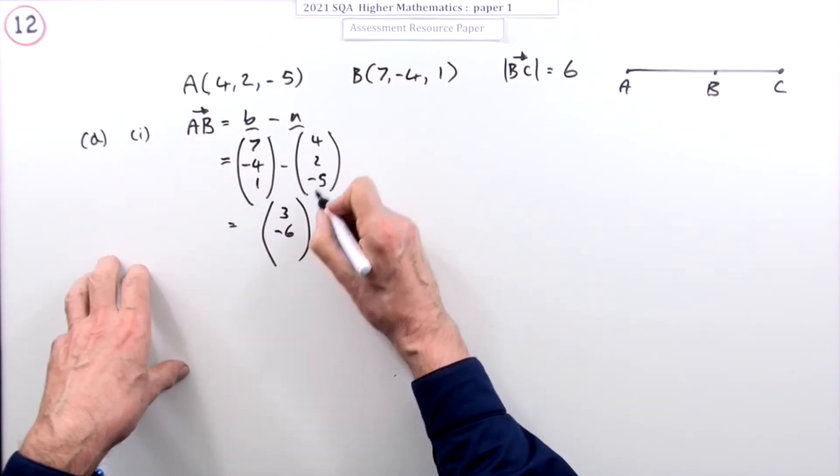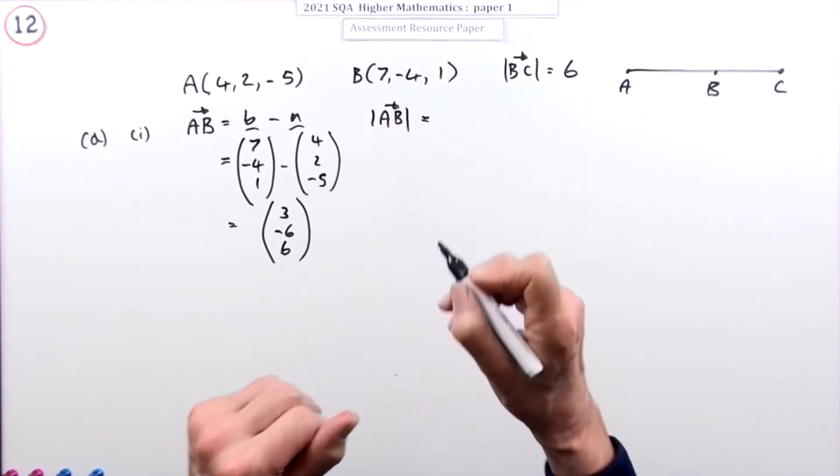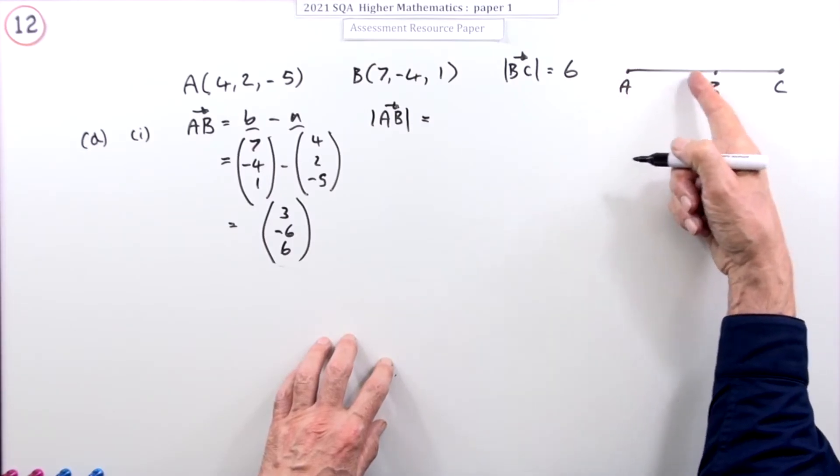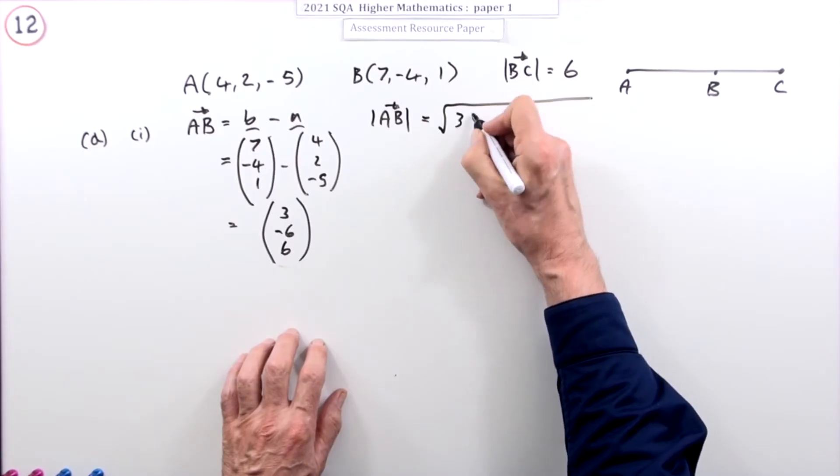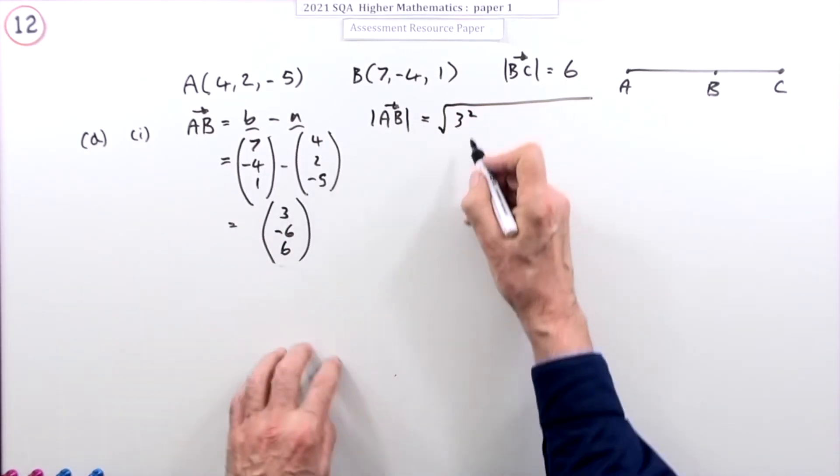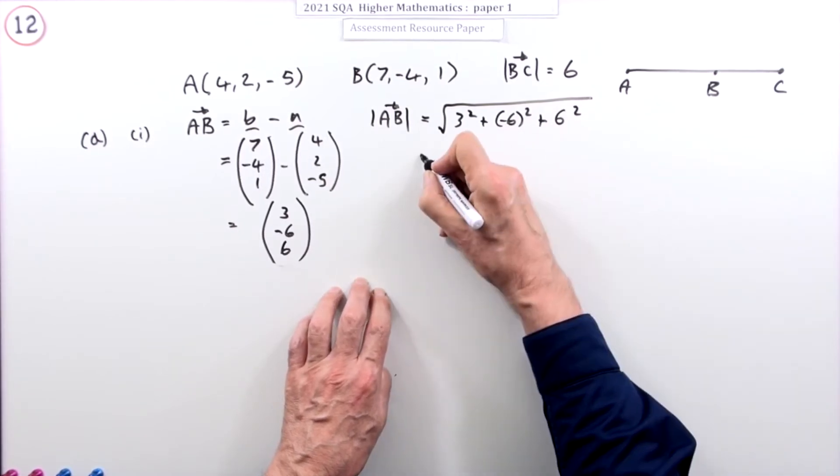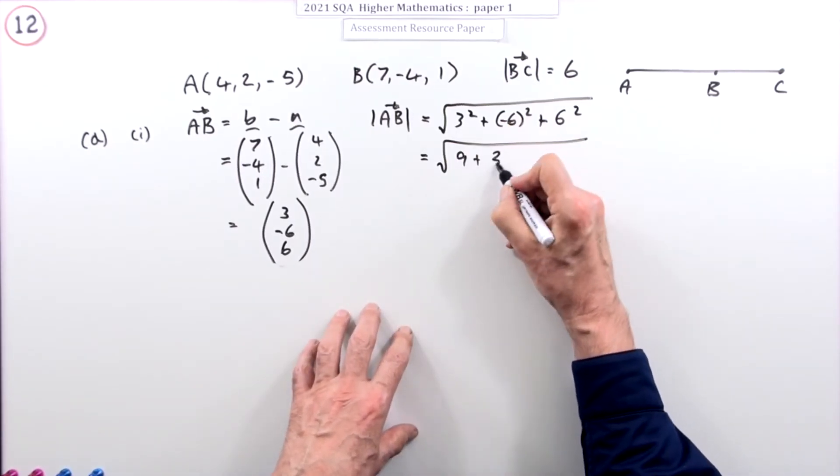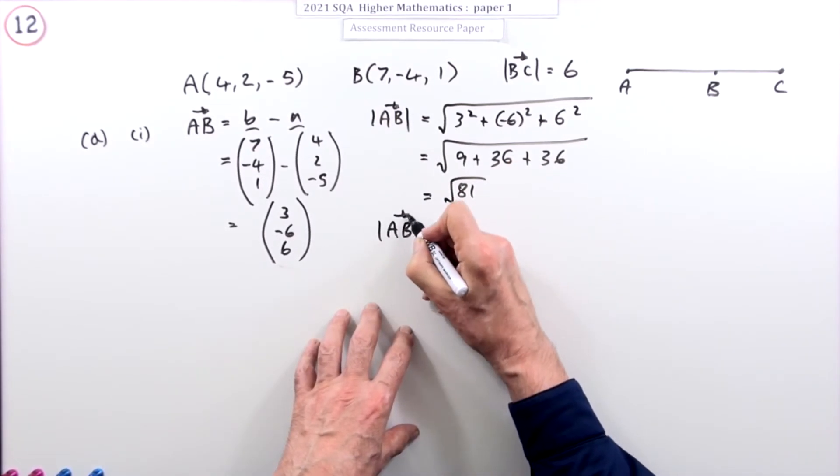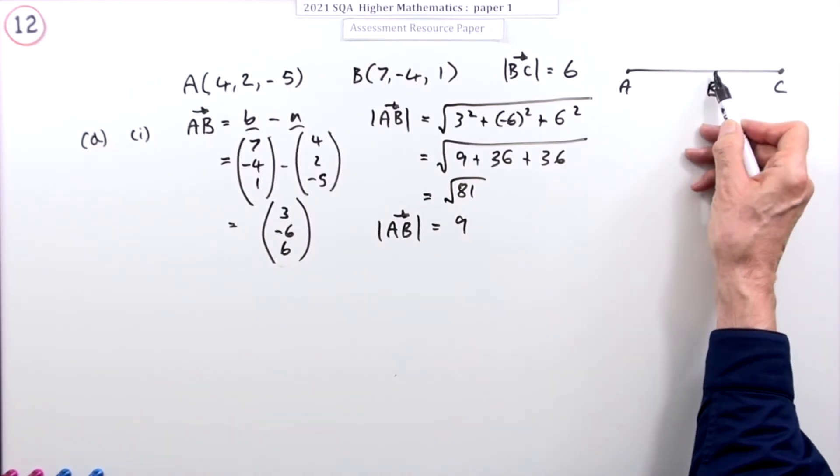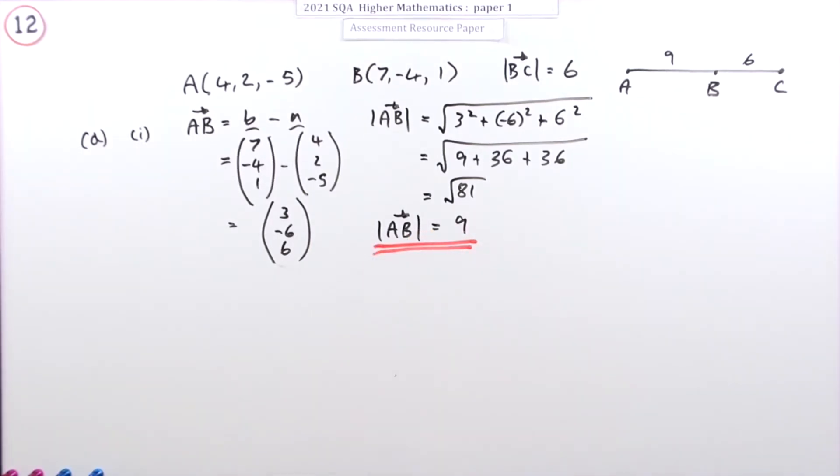Which means AB is going to be 7 take away 4 is 3, that'll be negative 6, and that's plus the 5 which makes that 6. So the magnitude of that then, the magnitude of that vector or you could see the magnitude of that displacement, the size of the move, will be just doing three-dimensional Pythagoras. So it'll be the 3 squared, you could take the factor of 3 out and then just have 1, negative 2, 2 getting squared, plus the negative 6 squared, plus the 6 squared. So add that lot up, what have you got? You've got the 9 and the 36 and the 36, so that's 72, 81, which means the magnitude of AB is 9. It's 9 units to go from A to B. And it said here it's 6 units to go from B to C.